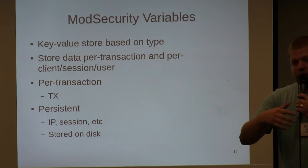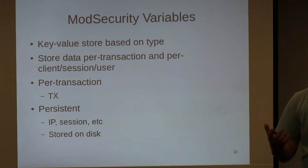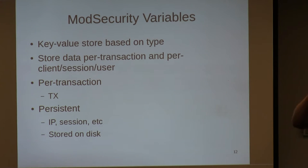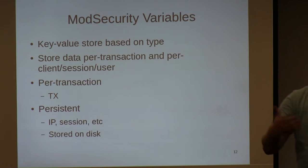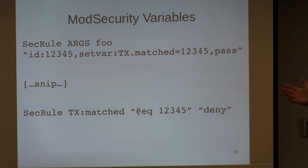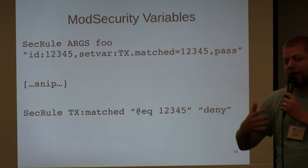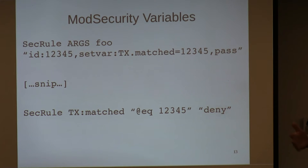ModSecurity has the ability to store additional variable information in a couple of different forms. There's per-transaction information where you can set a variable with an arbitrary key-value counter that lives only for the lifetime of the transaction. You can also set persistent data — a variable associated with an IP address, a session cookie, or any arbitrary definition — that stays alive for the duration of that session or potentially indefinitely for something like a client address. This lets administrators build complex chains of rule sets on pretty arbitrary logic.